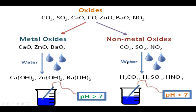When carbon dioxide reacts with water, it forms H₂CO₃, carbonic acid. SO₂ reacts with water and forms sulfurous acid. NO₂ reacts with water and forms nitric acid. When the pH is checked for these solutions, calcium hydroxide, zinc hydroxide, and barium hydroxide have a pH greater than 7, confirming they are bases. Nonmetallic oxide solutions have a pH less than 7, meaning they are acidic. We can conclude that metallic oxides are basic in nature while nonmetallic oxides are acidic in nature.